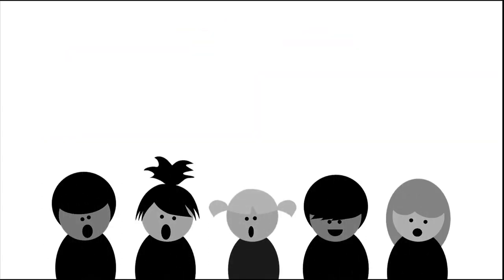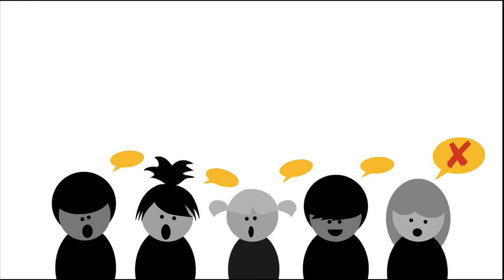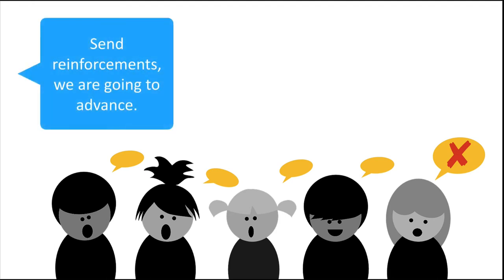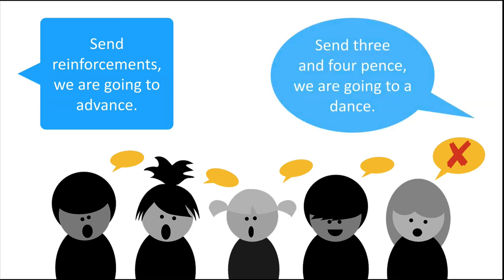In the game of Chinese whisper, also called telephone, a group of people sit together and one person whispers something to the person sitting next to them. The second person then whispers the same message to the next person and so on till the message reaches the last person. If you have played this game, you know that usually the message gets totally distorted by the time the last person says it out loud. A famous example is the military message 'send reinforcements, we are going to advance,' which became 'send three and four pence, we are going to a dance.'